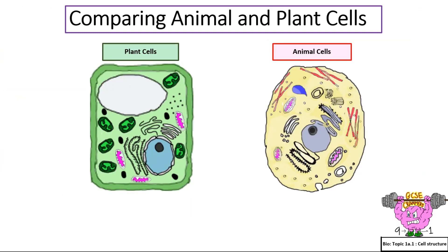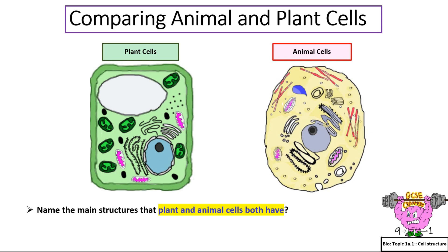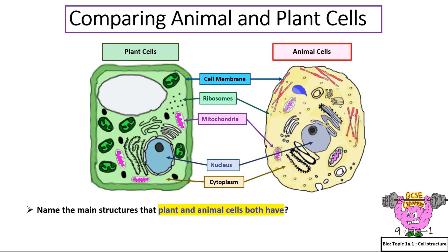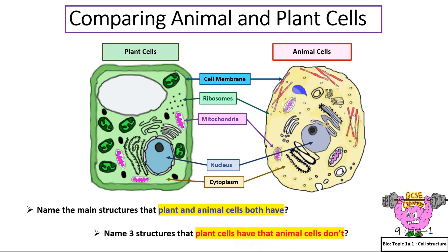Comparing animal and plant cells. Name the main structures that plant and animal cells both have: a cell membrane, ribosomes, mitochondria, nucleus, and cytoplasm. Name three structures that plant cells have that animal cells don't: cell wall, vacuole, chloroplast.